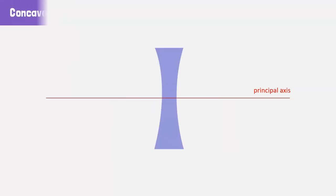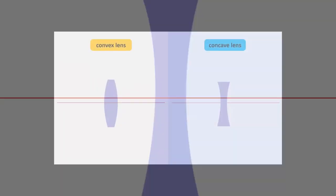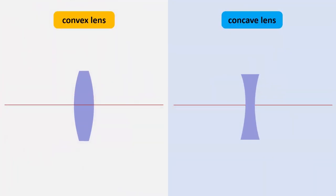What about a concave lens? How does it refract rays? Let's have a look. Both convex and concave lenses refract light. However, the light rays are refracted in different directions.